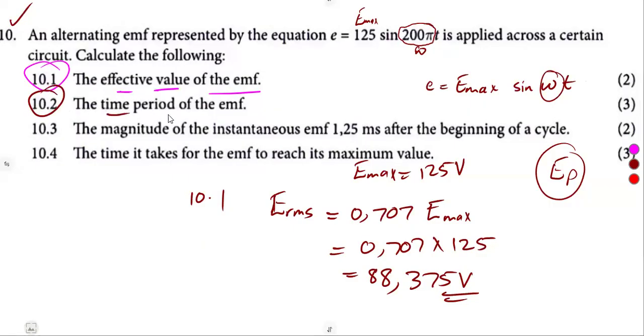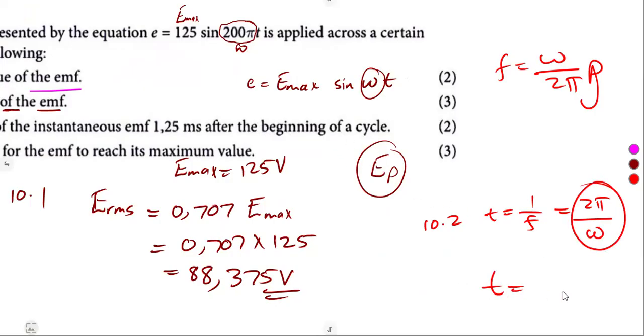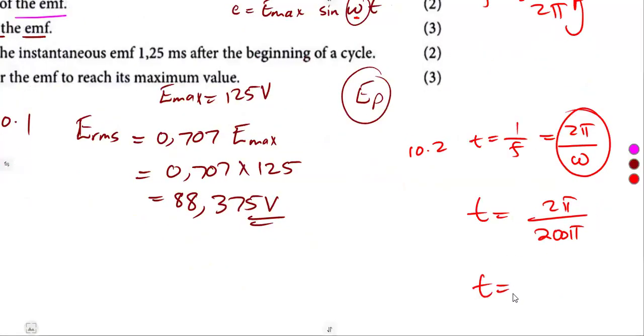10.2, the time period of the EMF. So T, remember, is one over frequency. I explained this one before. Time is one over frequency, but we do not have the frequency. But frequency is omega over 2 pi. So we say time is also 2 pi over omega. So we can use 2 pi over omega since we have the omega. This is our omega, 200 pi. So that is divided by 200 pi. That was going to give us 0.01 seconds.